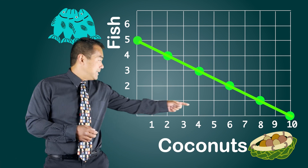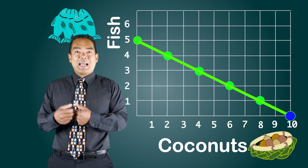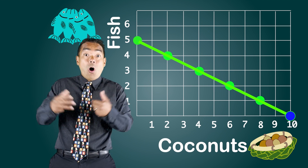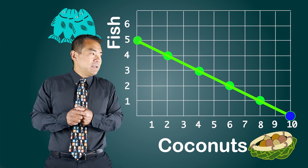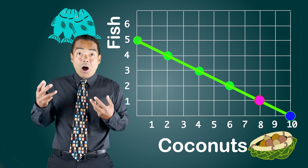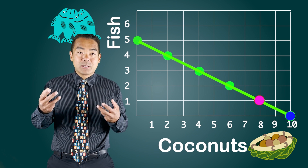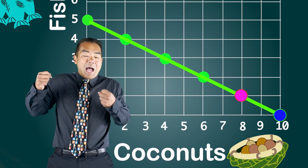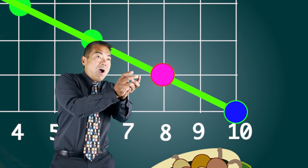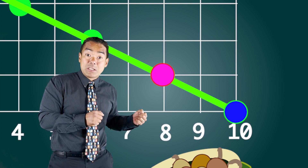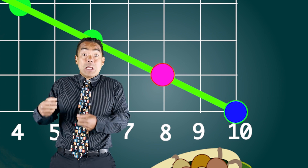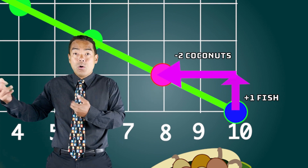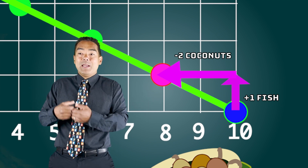It's when we're producing on the production possibilities frontier and all of our resources are being used to their maximum potential that opportunity cost becomes interesting. For example, let's say yesterday I collected 10 coconuts and zero fish. The next day I decide I want to eat some fish, so I need to allocate some of the time I was using to collect coconuts to the production of fish, because I'm already using all available hours producing coconuts. At the end of the second day I've produced one fish and eight coconuts. What is the opportunity cost of catching that one fish? The opportunity cost is two coconuts — by catching one more fish I am giving up the ability to produce two more coconuts.